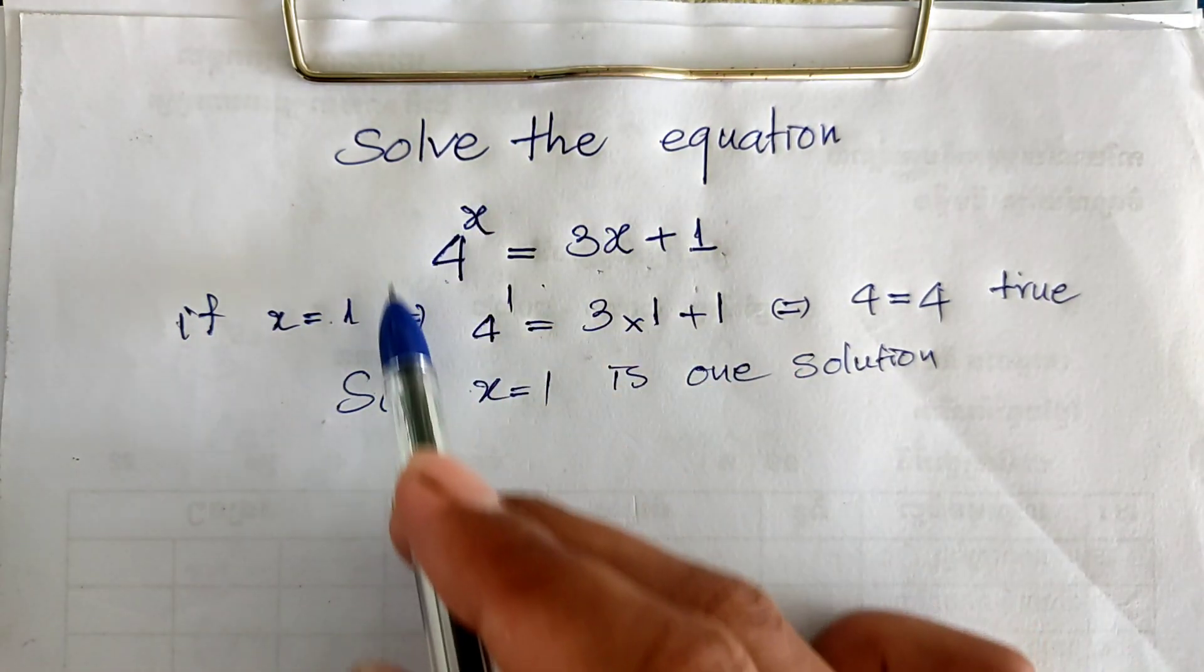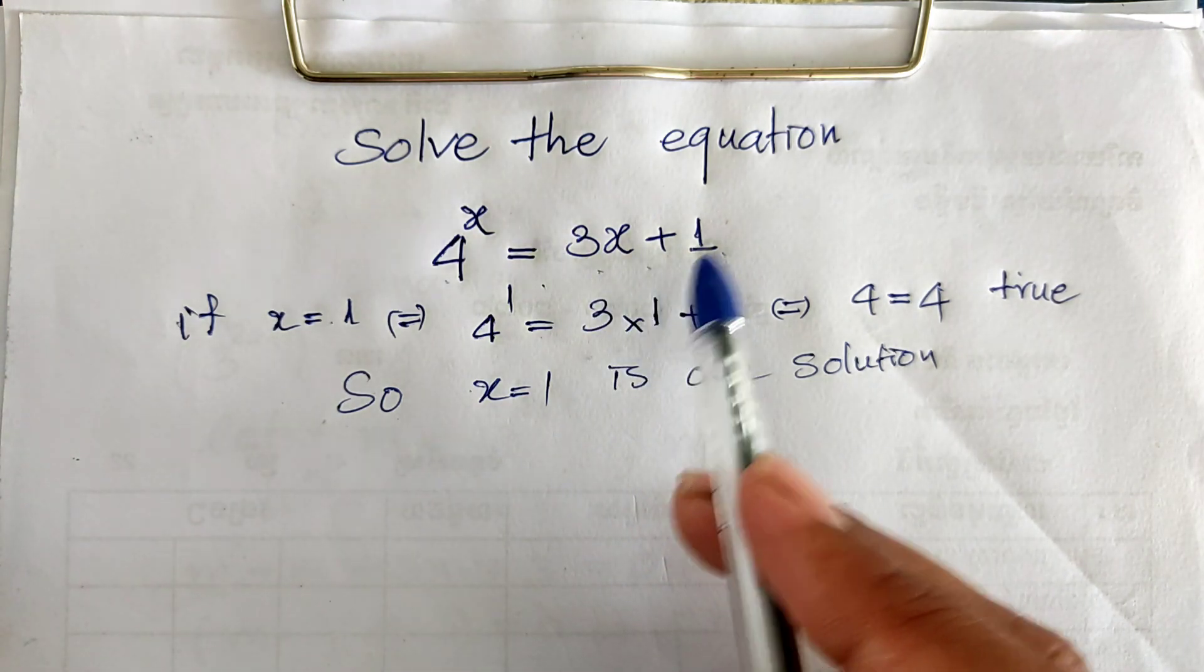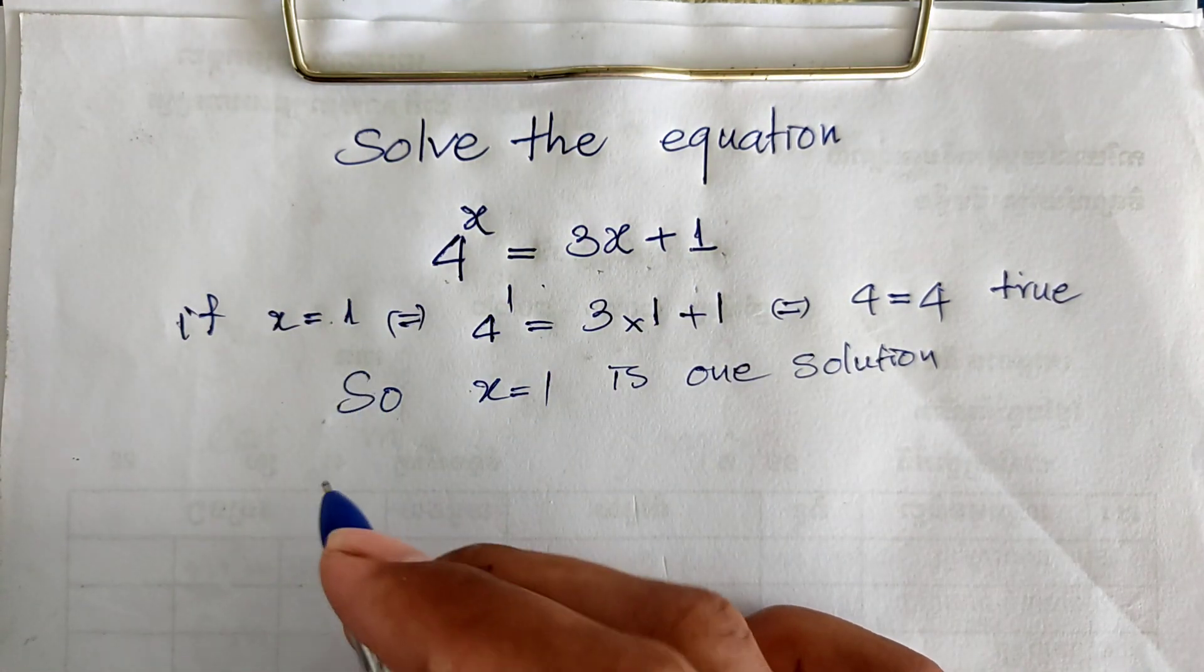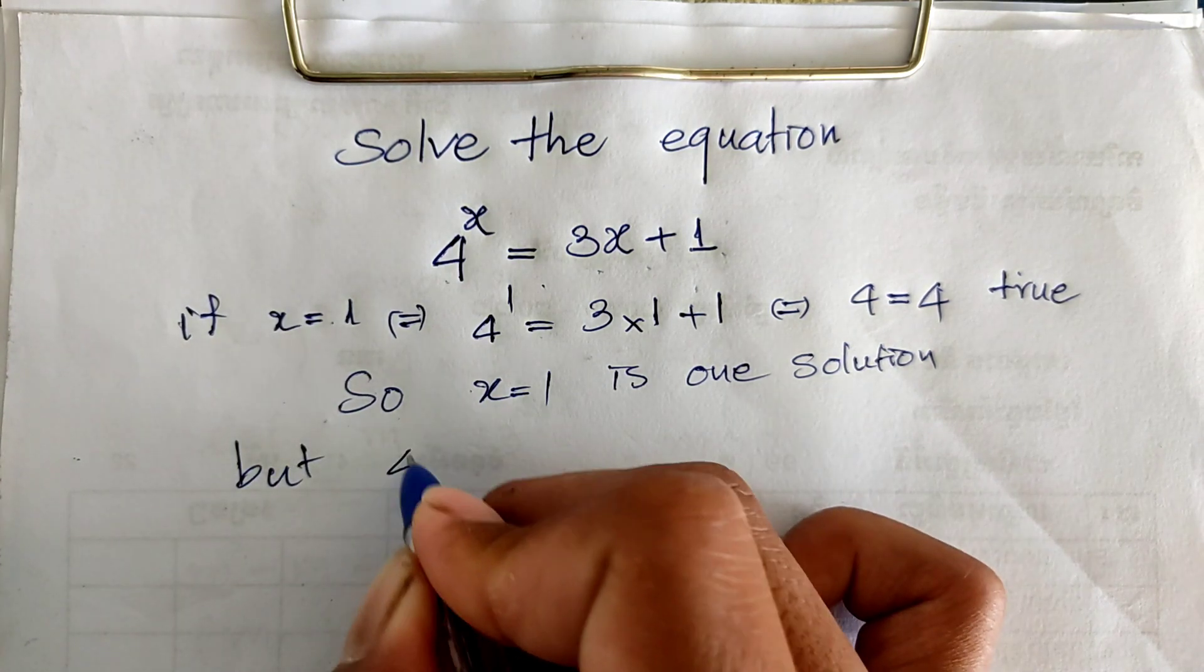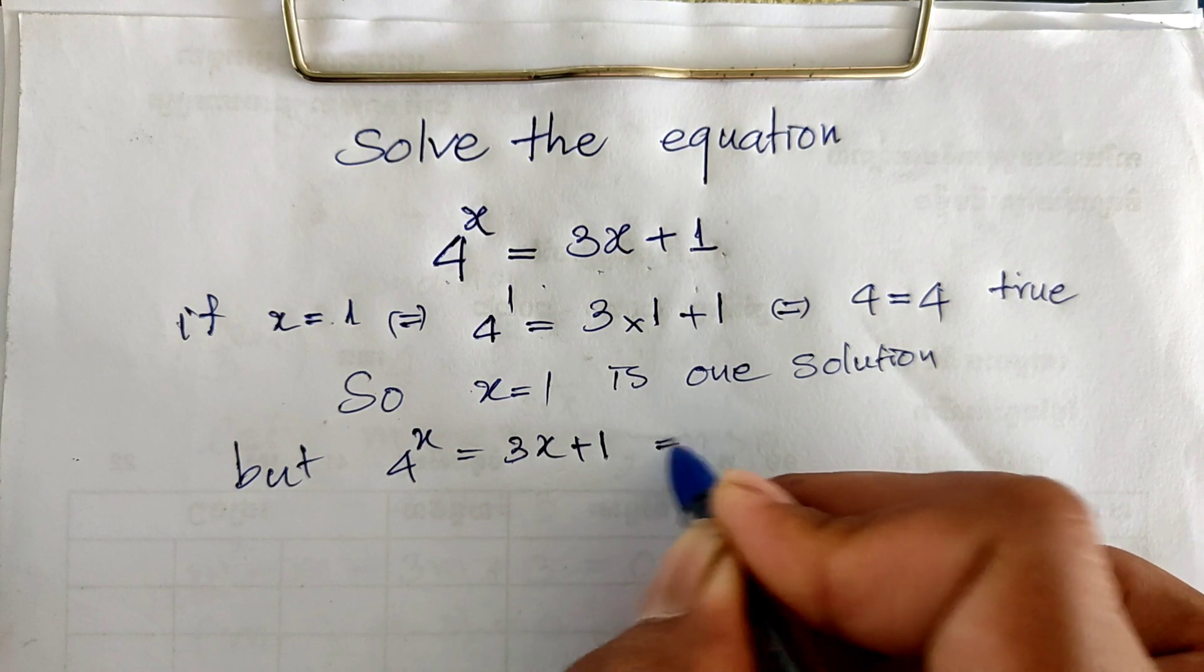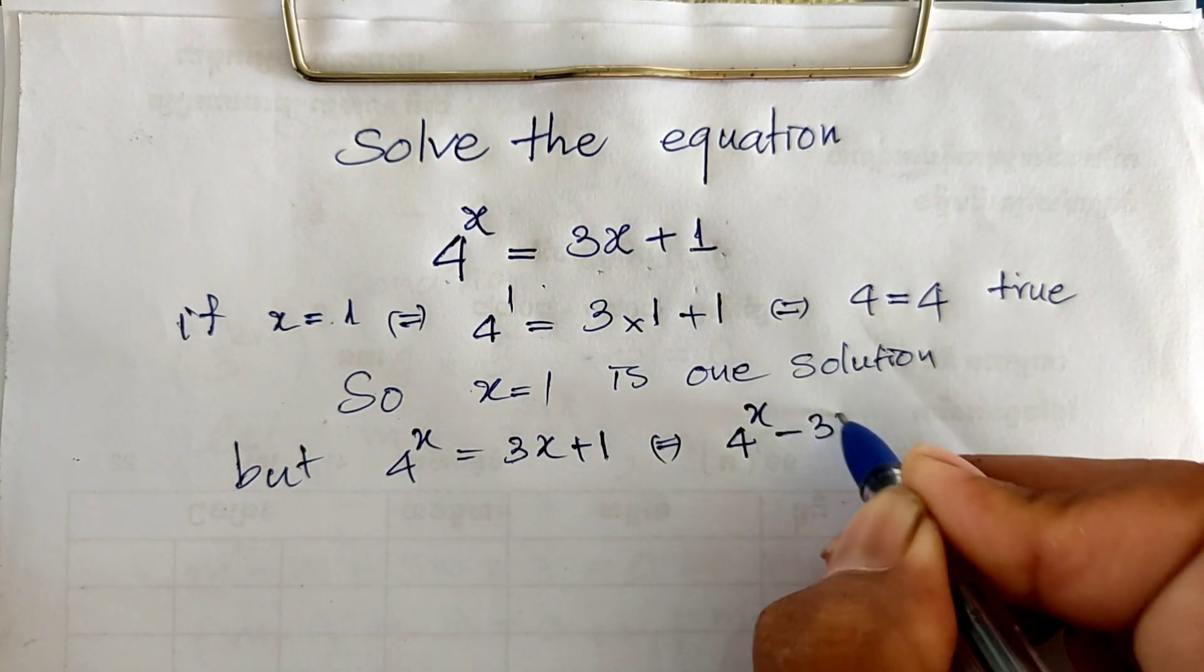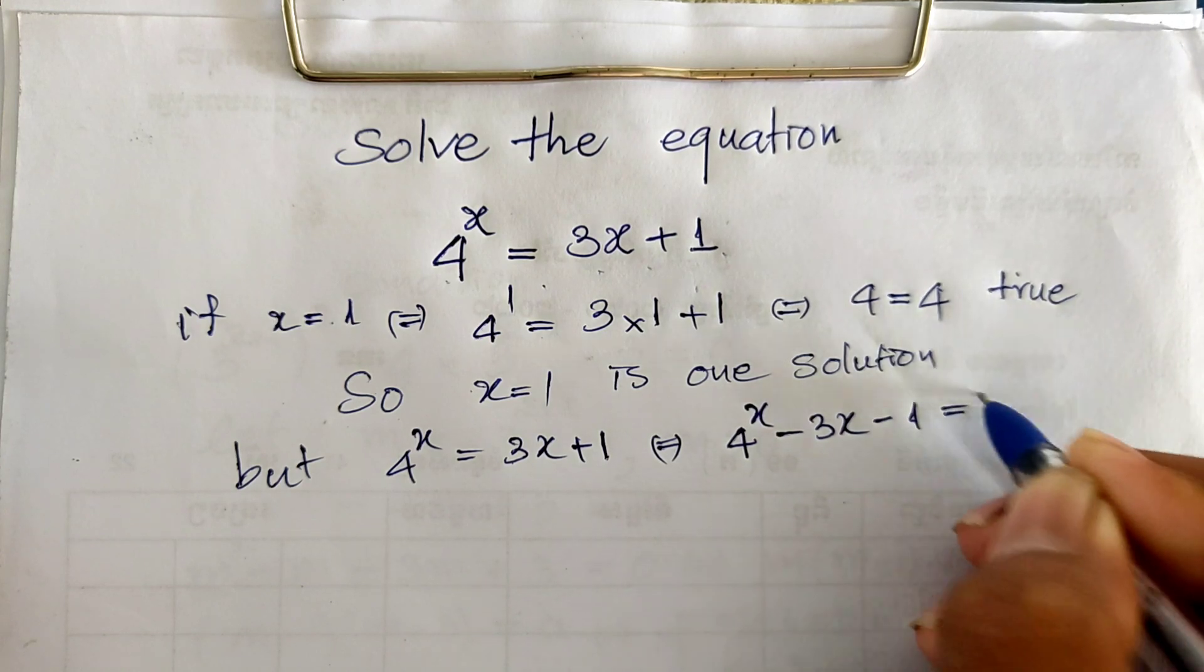Now from our equation, I change 3x plus 1 from the right hand side to the left hand side. So 4 power x equals 3x plus 1. I get 4 power x minus 3x minus 1 is equal 0.